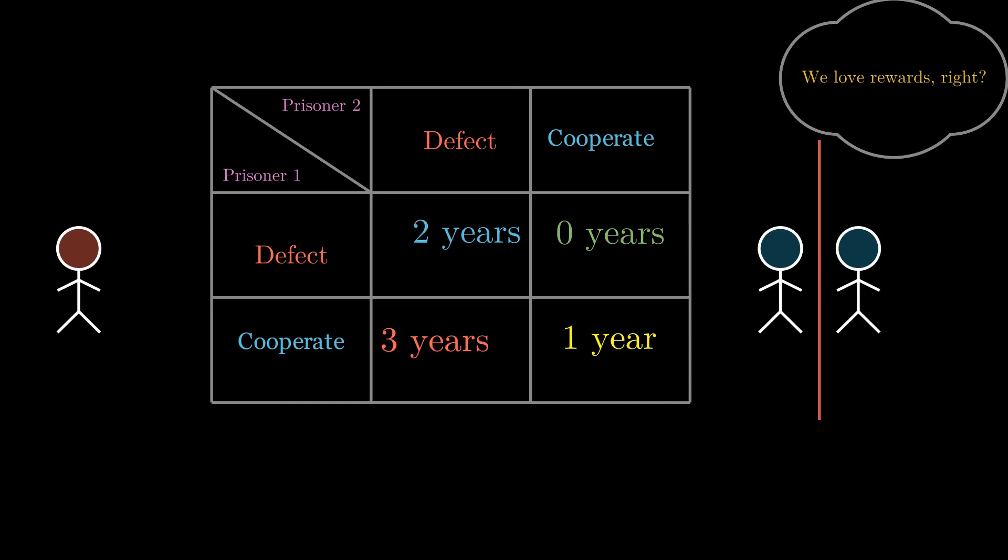When both of them defect, let's say they both get two points as punishment for defection. When both cooperate, let's say they get three points as reward for cooperation. When one defects and the other cooperates, the one defecting gets five points and the one who cooperates gets zero points for being a sucker.